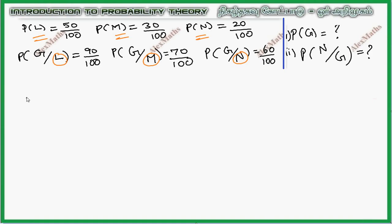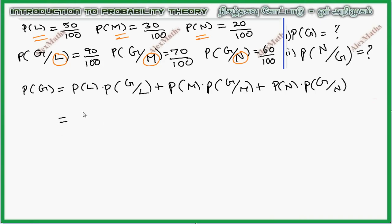First subdivision is P of G. P of G equals P of L into P of G given L plus P of M into P of G given M plus P of N into P of G given N. So 50 by 100 into 90 by 100 plus 30 by 100 into 70 by 100 plus 20 by 100 into 60 by 100.